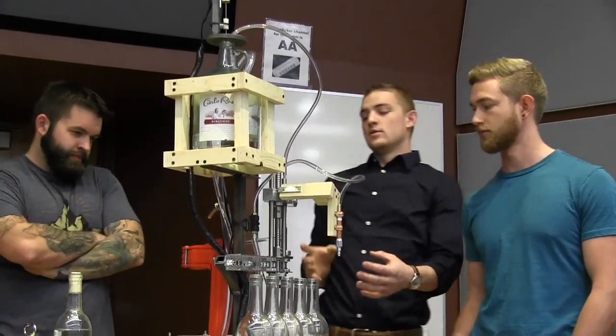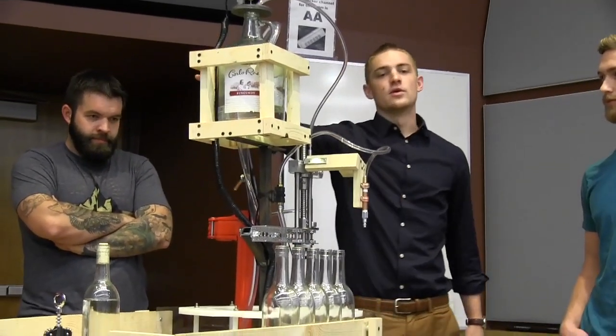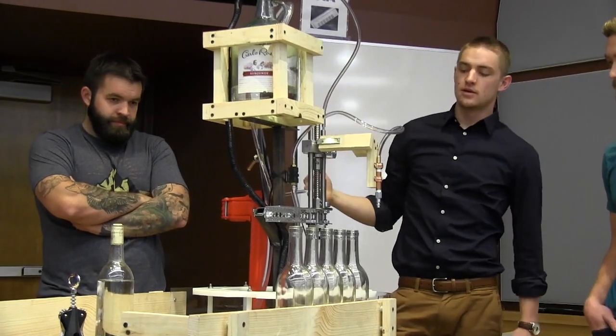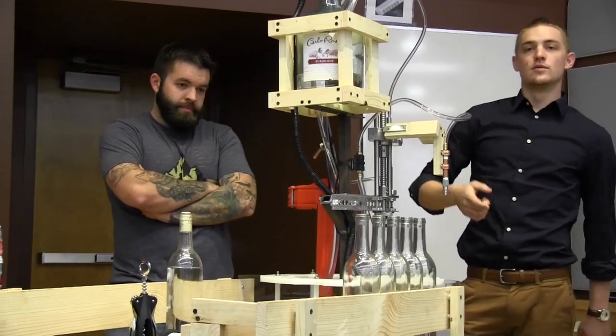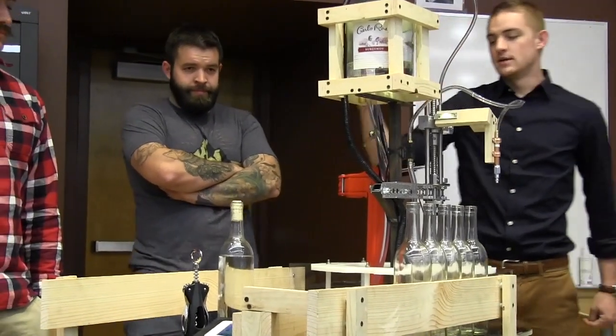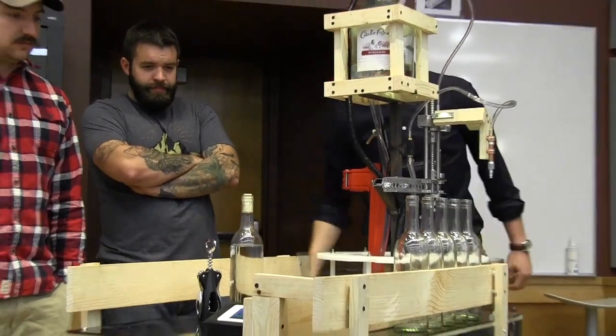Then the rotunda will move into the third position for the corking process, which the machine operator will hand cork the bottle. And then finally it will rotate out of the rotunda as a finished corked bottle of wine.